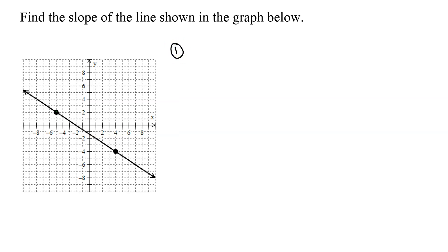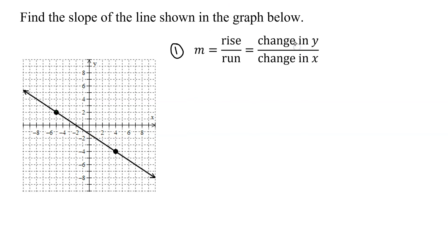So the first method, I'm going to basically use counting. And I'm going to use the fact that the slope is equal to the rise over the run, or the change in the y values divided by the change in the x values. Looking at the graph, I could pick quite a few different points to figure out my change in y over change in x, but I think it's better to use the two points indicated.